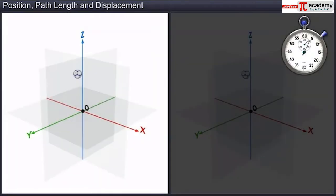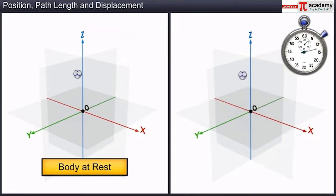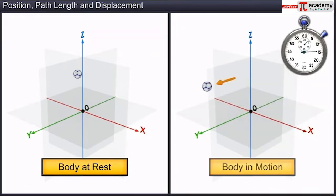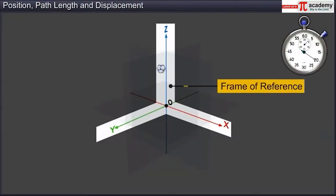When the coordinates don't change with time, the body is said to be at rest with respect to the frame of reference. Rest and motion are relative terms and are always specified with respect to the frame of reference.